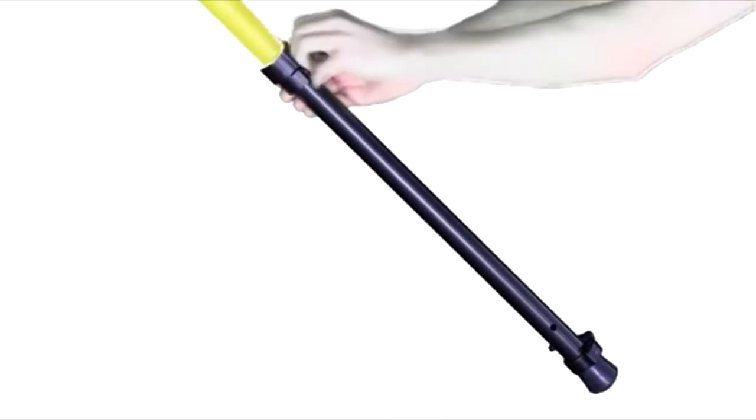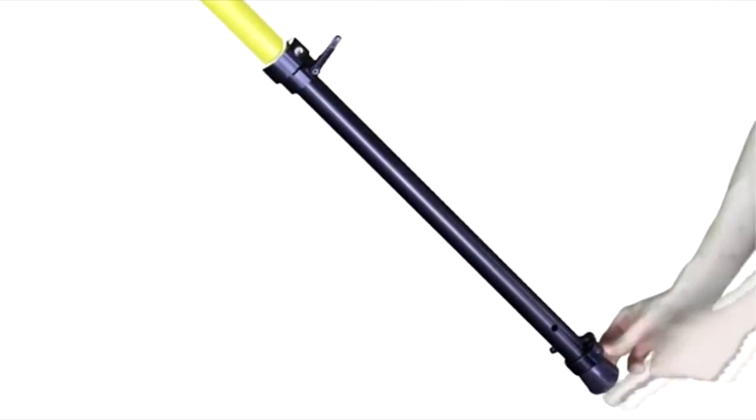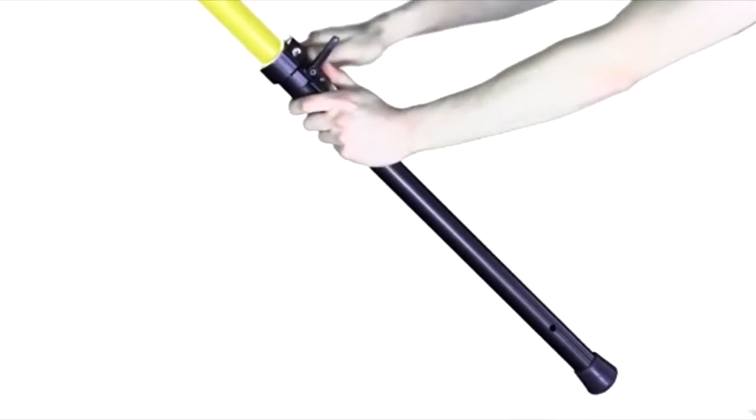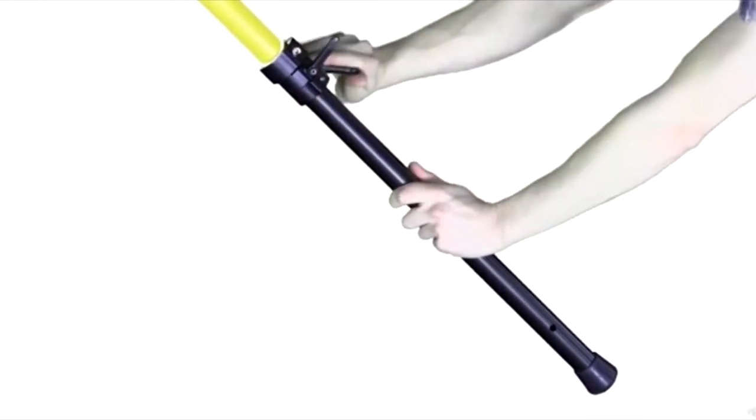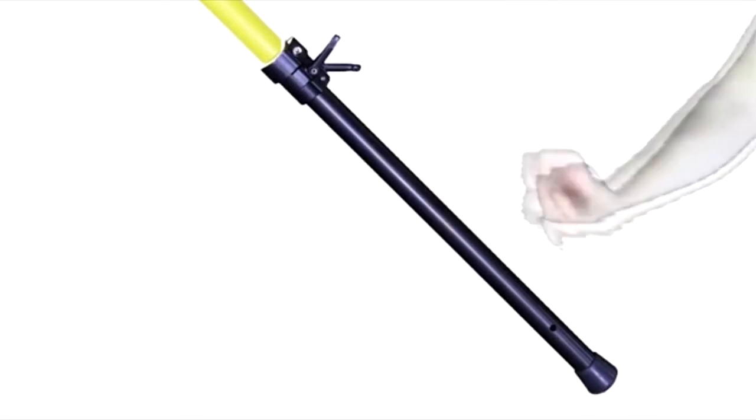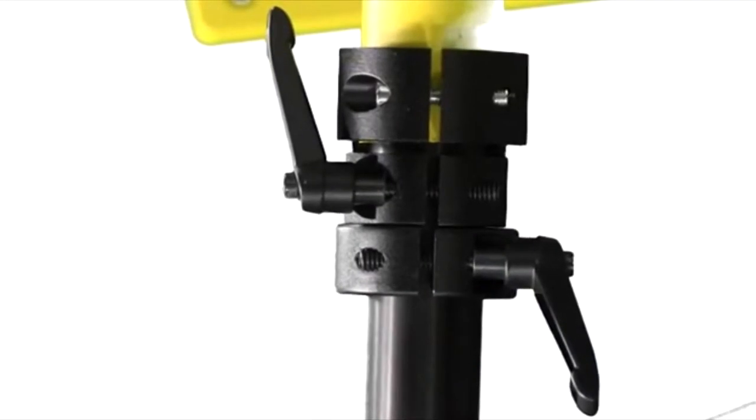Once the leg is confirmed to be stable and the primary leg lock has been tightened, you can adjust the second leg lock into place. This is a redundant safety lock in case the primary lock ever gives way or slips. Both leg locks must always be used on each leg. Never extend a Hi-Pod tubing system until both leg locks are in place. You can see another view here of what these leg locks look like in their proper positions.